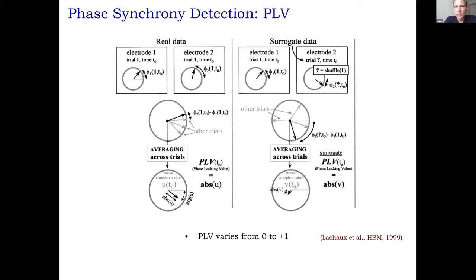Statistical significance of phase synchrony can be assessed using surrogate data — shuffling the data to create a null distribution for the phase locking value (PLV). There are tools developed by Jean-Philippe Lachaux (1999) and Peter Tass (1998) for these measures. Surrogate-based statistics allow you to test whether the PLV you observe exceeds what would be expected by chance.